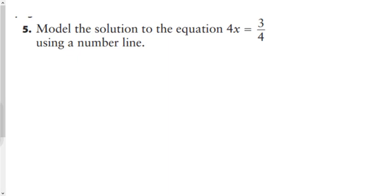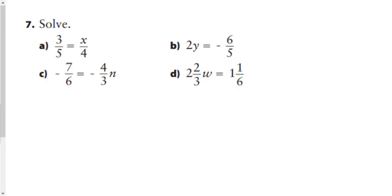Question five says model the solution to 4x equals three quarters, so it says using a number line. I guess we said we didn't have to do this one, didn't we? I said you skip five. We'll skip five, come back to it. We'll start at question seven actually because we did six already as well.